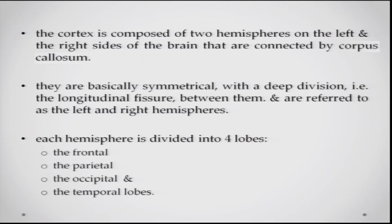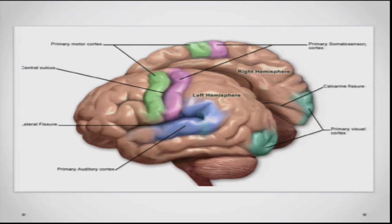Both hemispheres contain homologous versions of these lobes — the left and right hemisphere both have a frontal lobe, a temporal lobe, and a parietal and an occipital lobe. As shown in this figure, both hemispheres have the primary motor cortex, the primary somatosensory cortex, the primary visual cortex, and the auditory cortex.